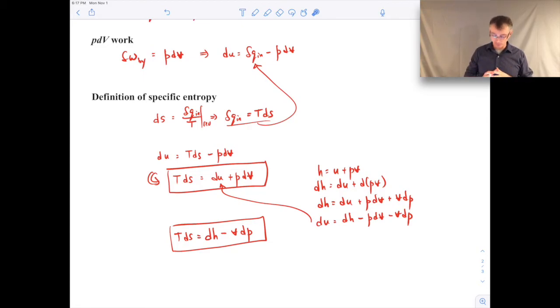One of the things I wanted to mention is that these are all properties in these equations, right? Temperature is a property, specific entropy, specific internal energy, P, specific volume, specific enthalpy. They're all properties. And so properties only depend on the endpoints or the state that you're dealing with. They don't depend on the path that you take to go from one state to another.